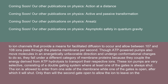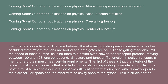ATP-powered pumps also move molecules in an energetically unfavorable direction and undergo conformational changes, but fall under a different category because they couple energy derived from ATP hydrolysis to transport their ions. These ion pumps are very selective, using a double gating system where at least one gate is always shut. The time between alternating gate openings is referred to as the occluded state. These gating reactions limit the speed of these pumps to between 10⁰ and 10³ ions per second.